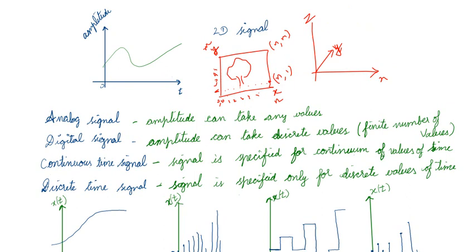Now, what is an analog signal? The amplitude can take any values — 0, 1, 2, 3, 1.5, 1.9, 1.999, 1.67 — it can take any values. Such signals are called analog signals. For example, when I am speaking, sometimes I raise my voice and the amplitude is very high, sometimes I keep calm and amplitude is near zero — it can take any value.